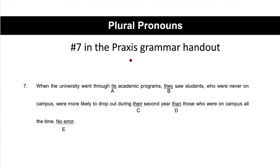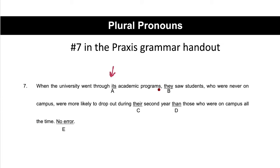Now let's take a look at what that might look like on the Praxis exam. We're going to choose the part of the sentence that is incorrect. If there's no error, we choose E. The sentence is: 'When the university went through its academic programs, they saw students who were never on campus were more likely to drop out during their second term than those who were on campus all the time.' I have the pronouns its, they, and their here.